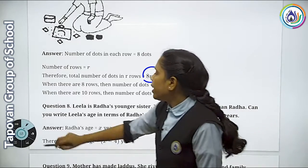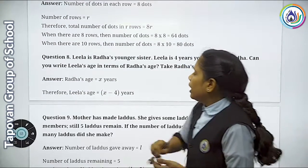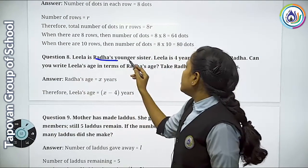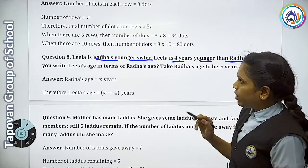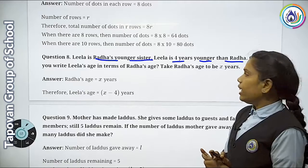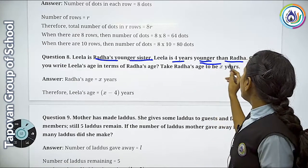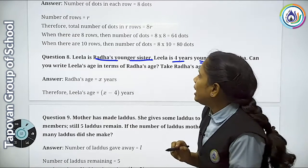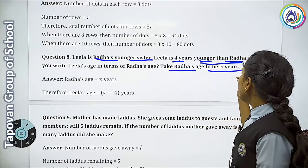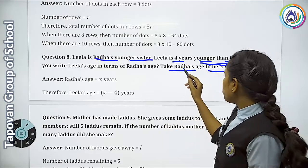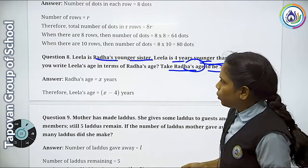Now let's talk about Question Number 8. Leela is Radha's younger sister. Leela is 4 years younger than Radha. So Leela and Radha are sisters. Leela is how many years younger? 4 years. Can you write Leela's age in terms of Radha's age? Take Radha's age to be x years. We will take Radha's age as x years, and in those terms we need to tell Leela's age.